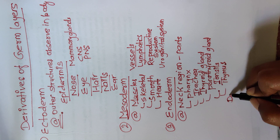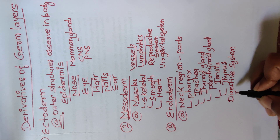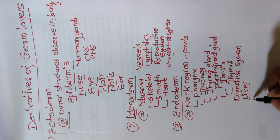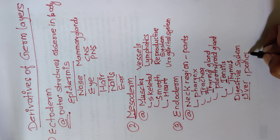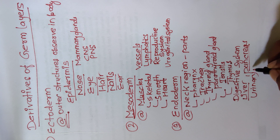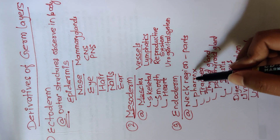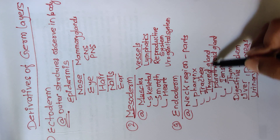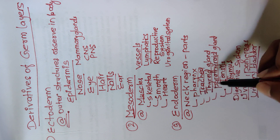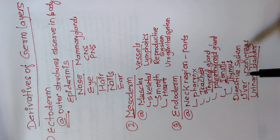Along with the neck region, the digestive system is also derived from endoderm. In the digestive system you can write liver, pancreas, and also urinary bladder. So for endoderm: neck region parts — pharynx, trachea, thyroid gland, parathyroid gland, tonsils, thymus — and digestive system including liver, pancreas, and urinary bladder. Thank you for watching.